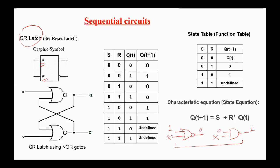Here is the SR latch implemented using NOR gates. We have two NOR gates; R and S are applied to the NOR gates, and there is feedback from the outputs to the inputs. In all latches and flip-flops there are two outputs, each the complement of the other — here we have Q and NOT Q.